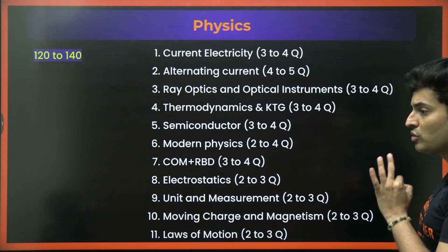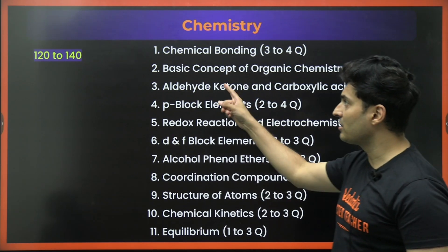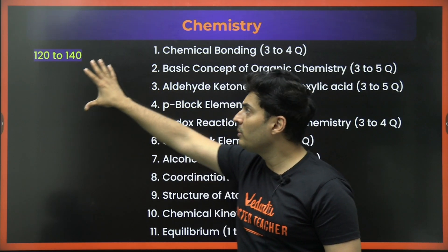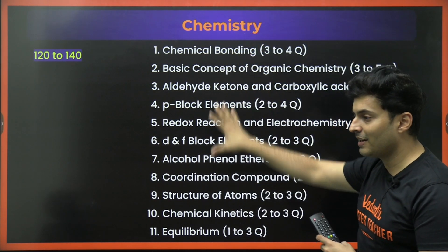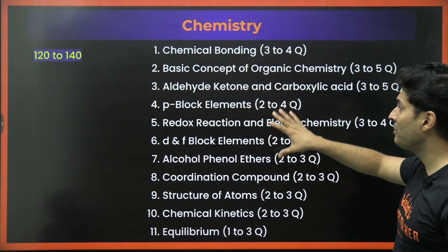Moving on to chemistry, again if you are targeting anywhere between 120 to 140 marks out of 180, then these are the chapters. So you can see chemical bonding, basics, organic chemistry, aldehyde, ketones, carboxylic acids.